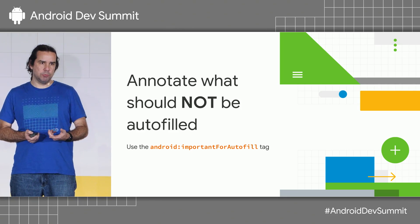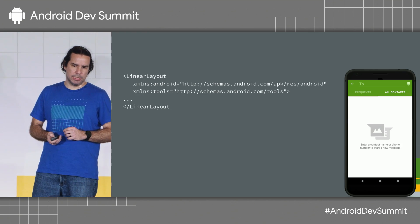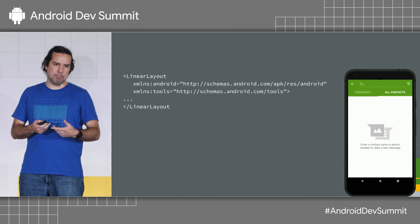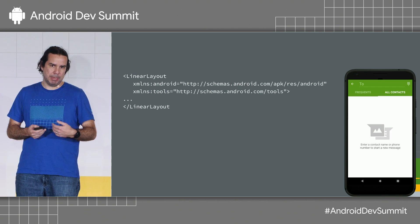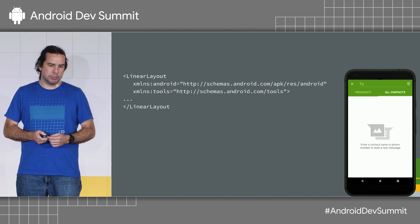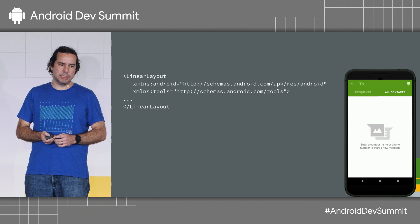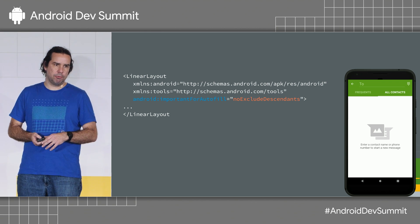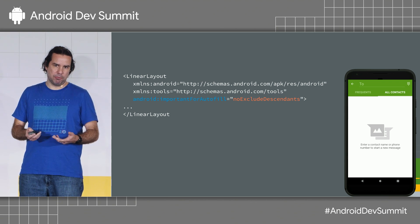There is also another issue: you should also annotate what should NOT be autofilled, and you do that using the android:importantForAutofill tag. As a real example, when I was developing this API last year, at one point I wanted to send an SMS to a friend, and I got a pop-up with my own telephone number as a recipient of the SMS. That doesn't make sense — when you're composing an SMS, email, or editing a spreadsheet, you usually want to type something dynamically and don't want pre-defined values from the password manager. The solution is to disable Autofill for your activity by annotating the root view with importantForAutofill equals noExcludeDescendants. Not only do you prevent the password manager from providing data where it doesn't make sense, but you also improve performance because you're not triggering Autofill at all.